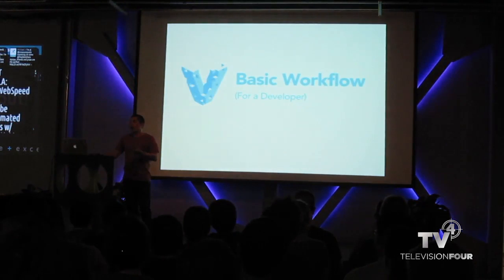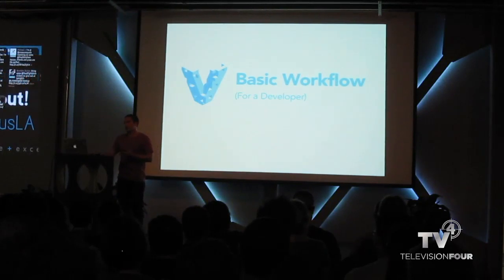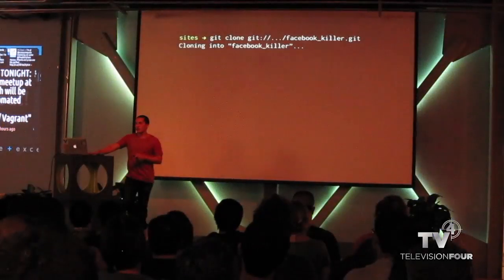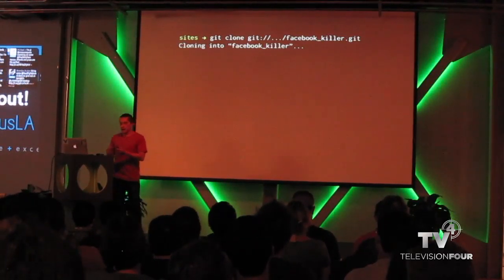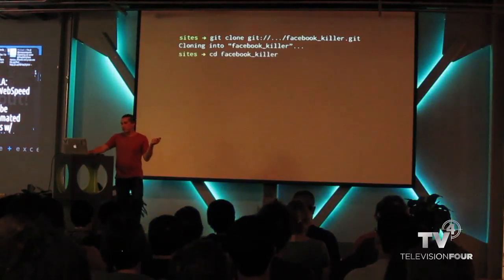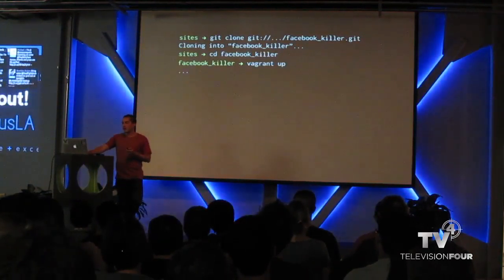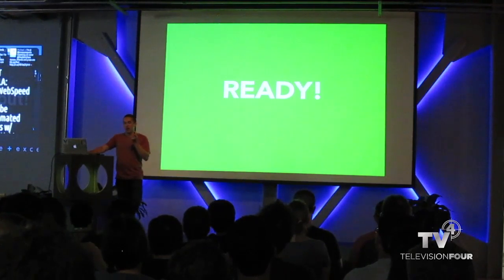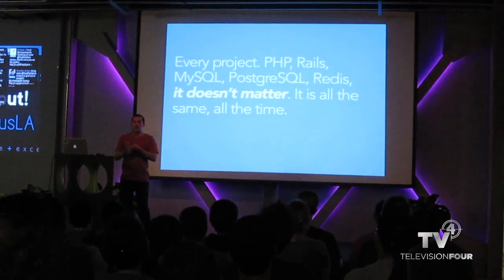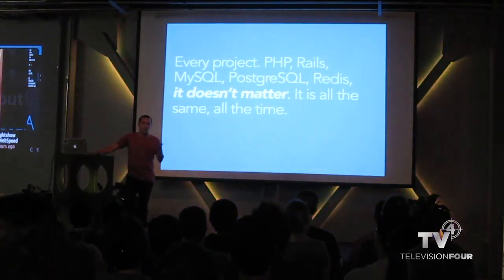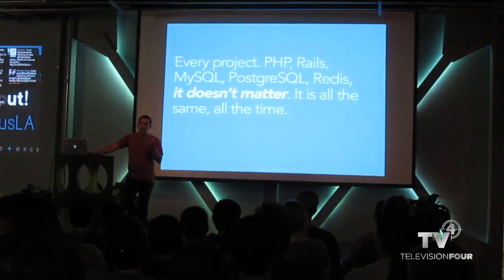Let's see what a basic workflow looks like for a developer. Once we have Vagrant set up, the engineer that got hired clones out the app, goes into it, runs Vagrant up, waits about 10 minutes, and then they're ready. And that's all there is to it. What's cool is that's every project, whether it's PHP, Rails, MySQL, Postgres, or some obscure database — it just doesn't matter. It's always the same.